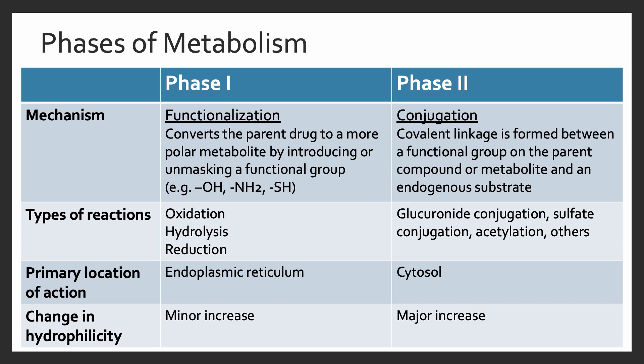These compounds can be broken down through phase one or phase two metabolism, though in most scenarios phase one is followed by phase two. Phase one metabolism is known as functionalization, where a functional group such as OH or NH2 is either added to or unmasked from a parent drug. This is primarily done through an oxidation reaction in the endoplasmic reticulum of the cell, typically resulting in only a small change in hydrophilicity.